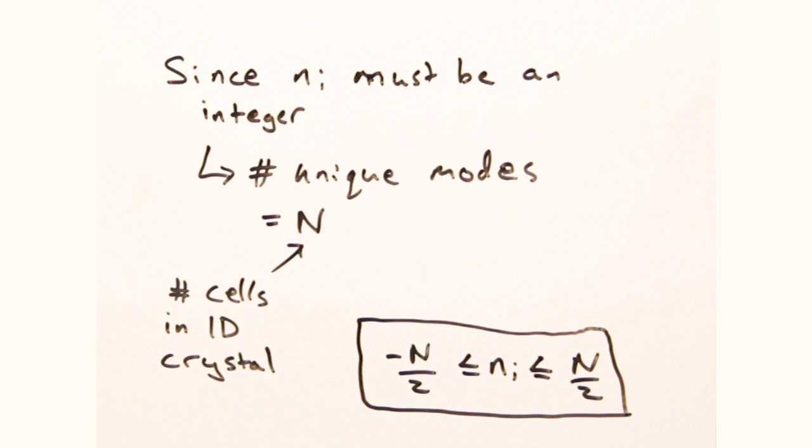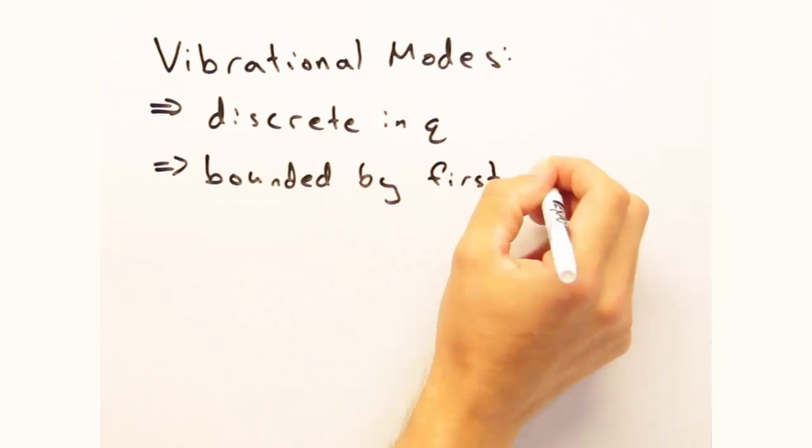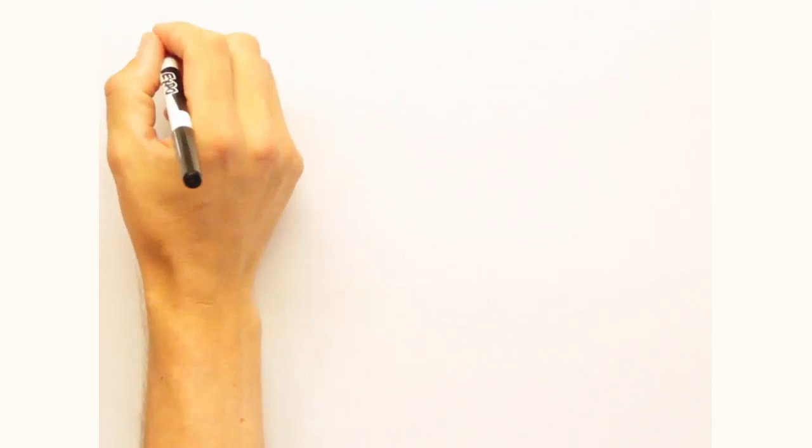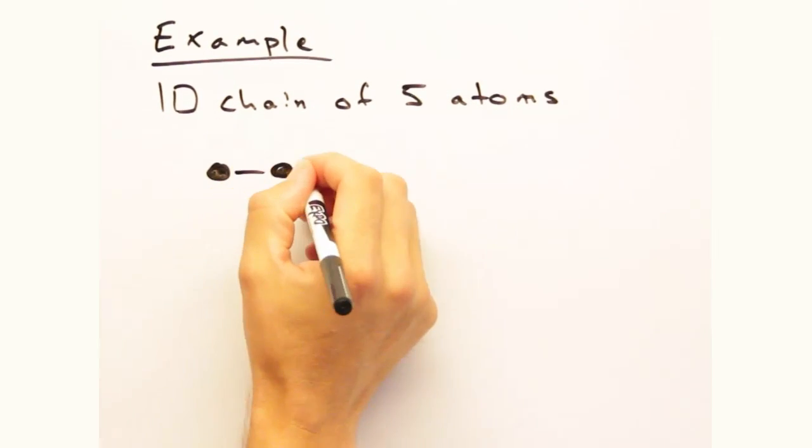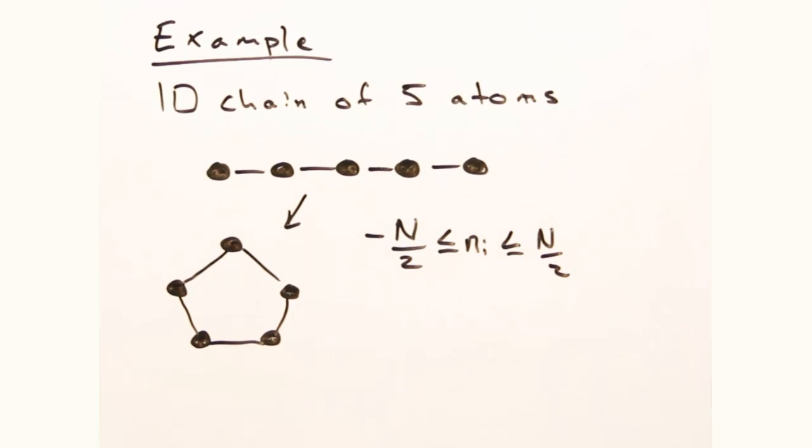With this, we can conclude that vibrational modes are not only discrete and bounded by a range of values, but a finite solid can only support so many modes. As an example, let's say I have a 1D chain of 5 atoms. Because n_i is an integer, it would be bounded from minus 2 to 2 with 5 modes total. How would our Q space look?